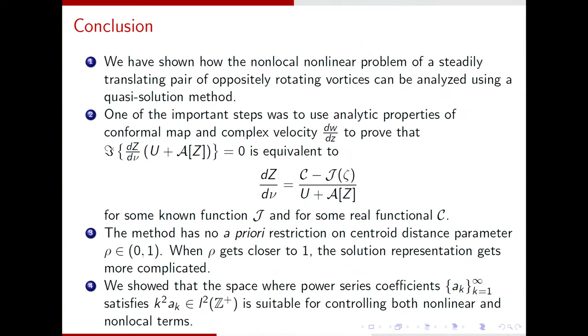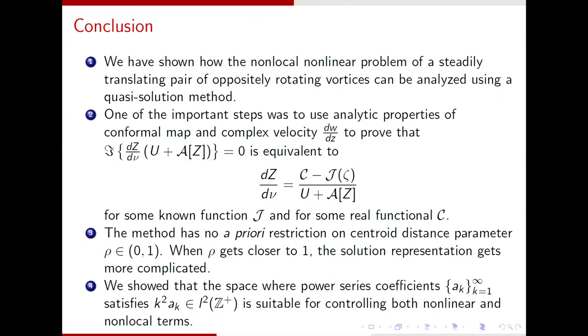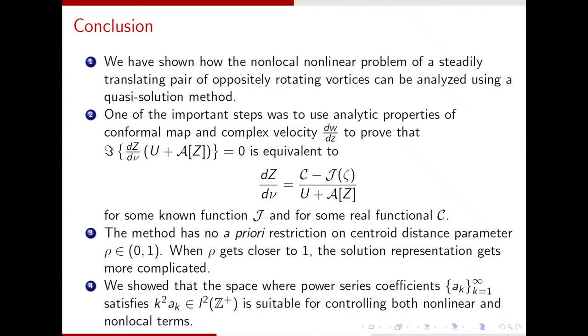So, anyway, conclusion. We have a non-local, non-linear problem of steady translation. Can be analyzed using a quasi-solution method. One of the important steps was to use analytic properties of conformal map and complex velocity that what used to be, got transferred to an equation. And the method has no a priori restriction on the vortex, on the centroid distance or parameter, which is the rho. And when, except that when rho gets closer, the solution representation becomes far more complicated as we have. So, that the space where the power series coefficient satisfies k squared times a_k is L2.